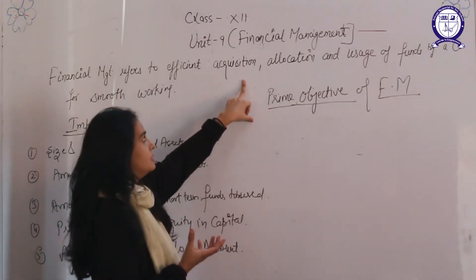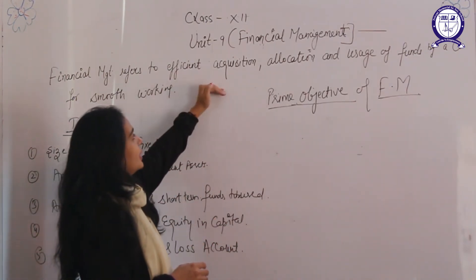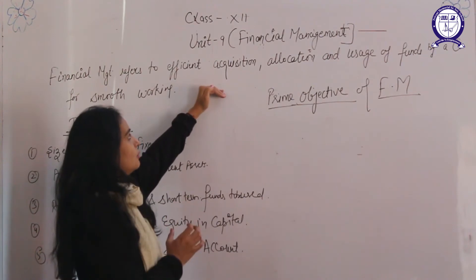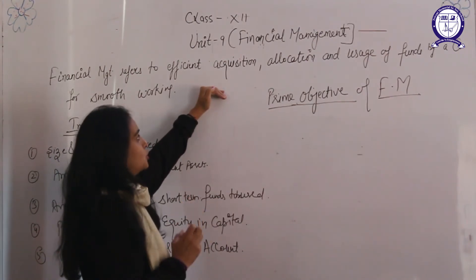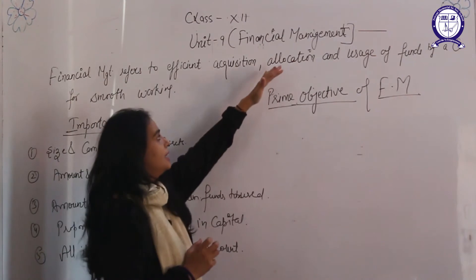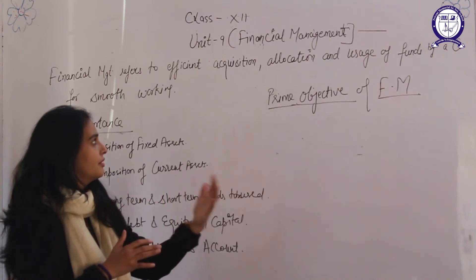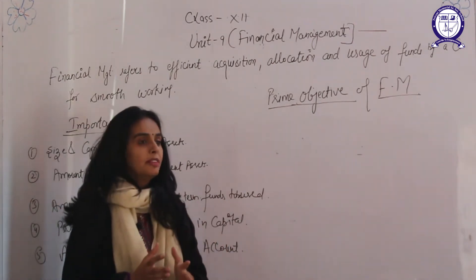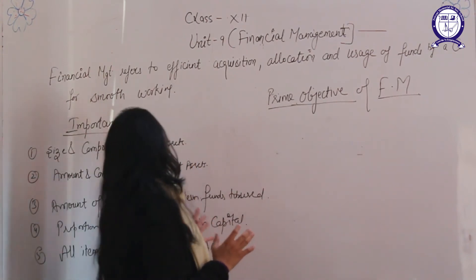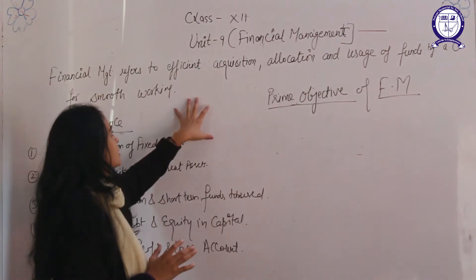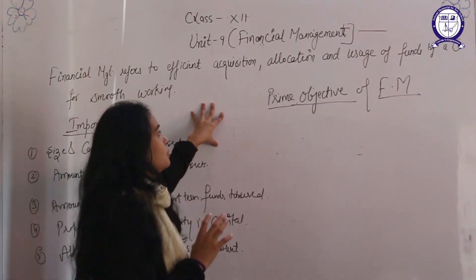Financial management is basically the efficient acquisition — meaning the financing decision to collect money for investment purposes from the market. When the finance manager collects money from the market, they should keep in mind that the cost of capital should be minimum, risk should be minimum, and the allocation — investing money into different types of projects, both long-term and short-term investment projects — should be managed carefully.